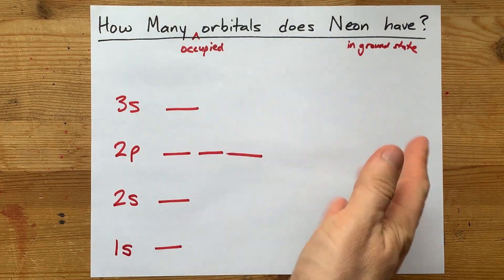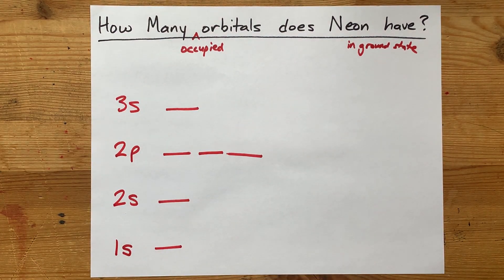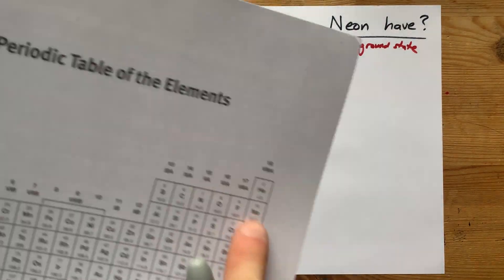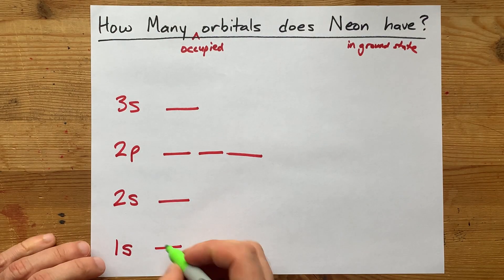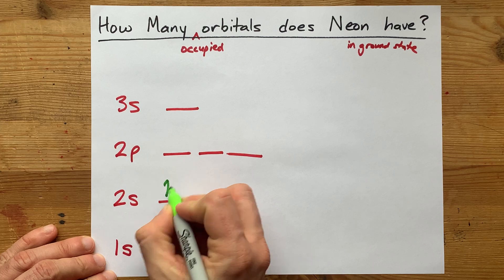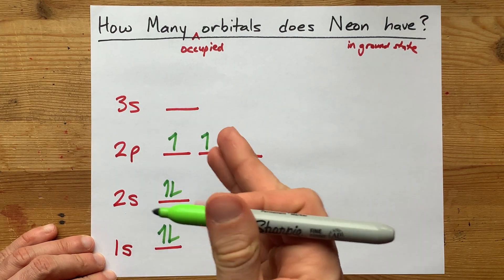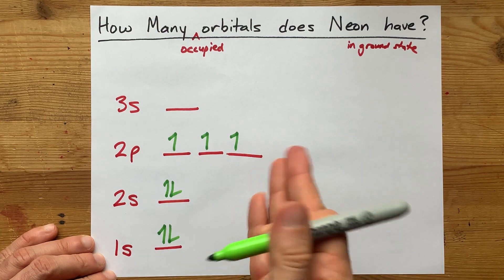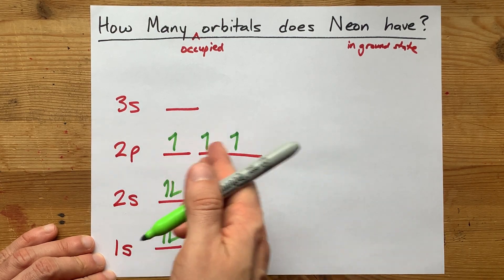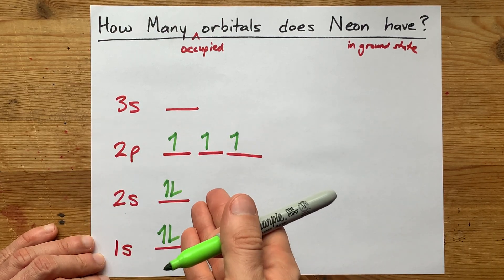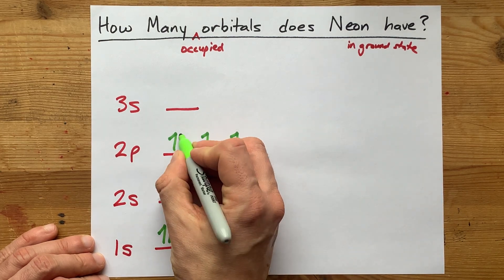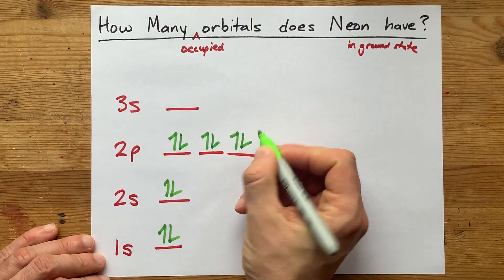Now I'm just going to jump to the answer, then I'm going to show it to you with quantum numbers. Neon needs 10 electrons total, right? So 1, 2, 3, 4, 5, 6, 7. I'm counting up to 10. And by the way, I'm spreading them out before I double them up. That's Hund's rule or something. 8, 9, 10.